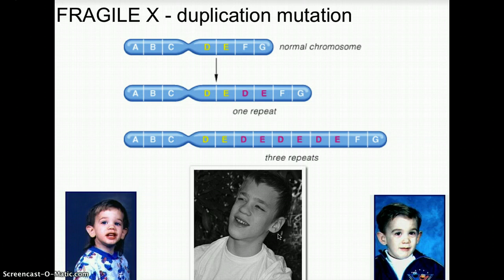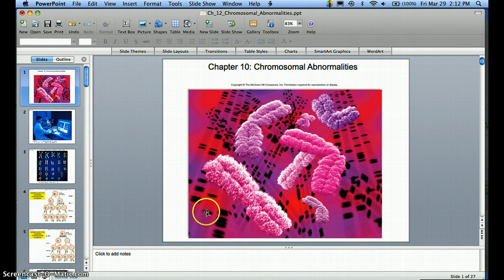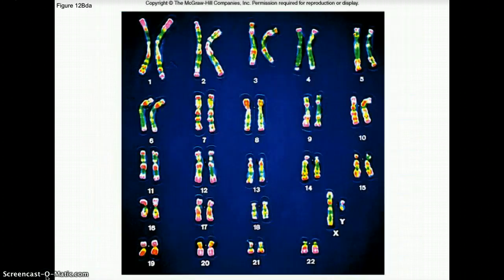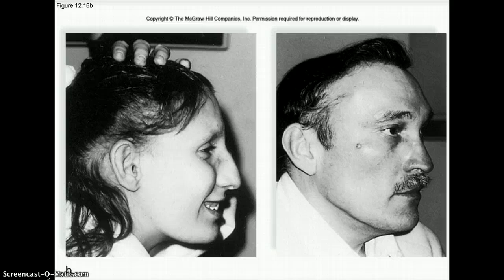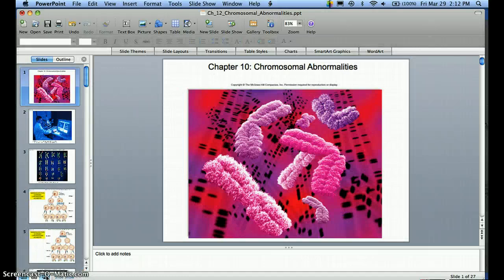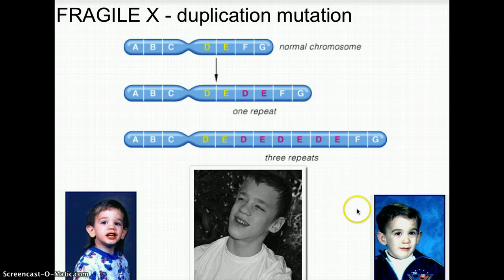In Fragile X syndrome, you have the normal chromosome and then you get repeat expansions. Fragile X syndrome presents with distinct facial features, as seen in the young man in the picture shown.